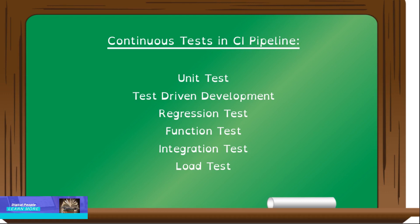Integration Test: In the integration test phase, the modules that went through changes should be auto-integrated into co-services and modules without any impact. In our example, if the new password policy allows special characters, it should not impact the underlying system. Nowadays, most system integration happens through APIs. To execute these test case scenarios, we can automate using tools like Swagger UI, JMeter, and RestAssured.